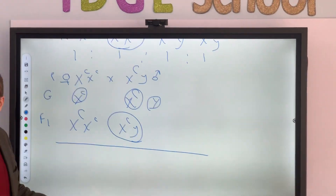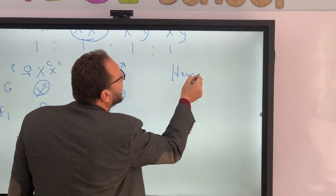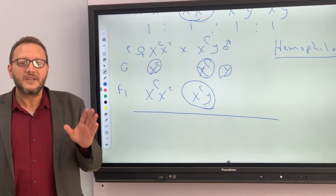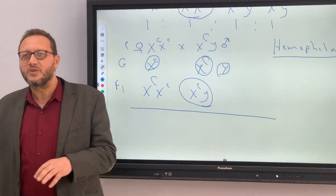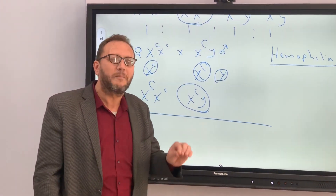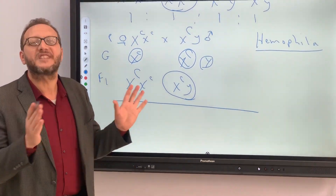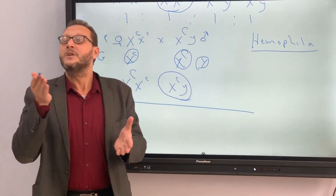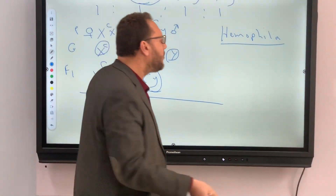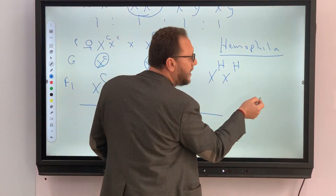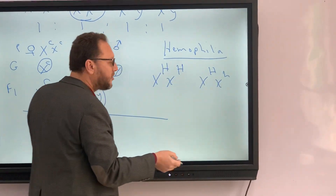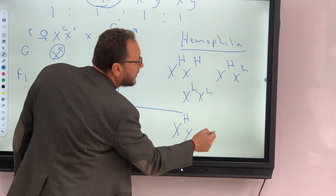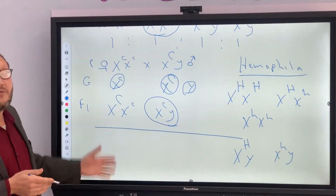We have other severe diseases related to this problem, like hemophilia. What is hemophilia? Hemophilia is about blood fluidity — the disability of the blood to clot. It affects the blood's ability to stop bleeding, due to a defect in the gene responsible for forming thrombin protein, which is needed for clotting. It follows the same rules as color blindness. All we have to do is replace C capital with H capital for hemophilia, and H small instead of C small. So: X^H X^H is a healthy female, X^H X^h is a hybrid carrier female, X^h X^h is a diseased female. Males will be X^H Y (healthy) or X^h Y (diseased).